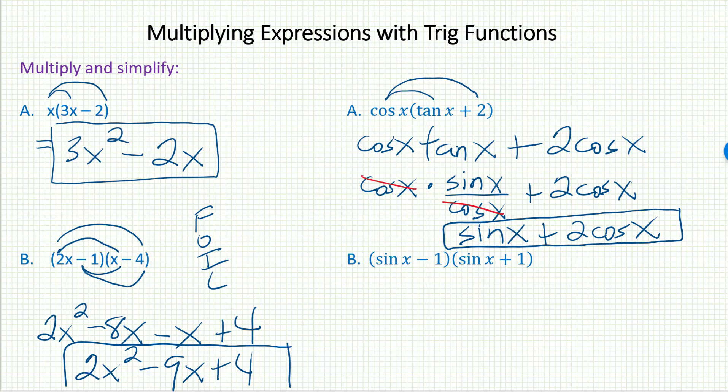Again, similarly with trig. When you see a binomial times a binomial, go ahead and use FOIL. First would be sine x times sine x. That's sine squared x.